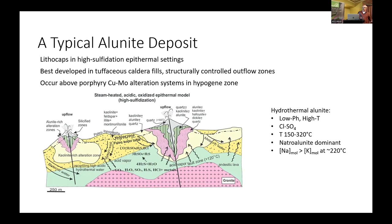A typical alunite deposit, shown in cross section, is below the quartz litho-cap where high-temperature fluids come up along structures and replace the felsic hosts. They're best developed in andesite and felsic calderas along the bounding structures. The hydrothermal alunite forms from low-pH, high-temperature, chlorine and sulfate-rich fluids at around 150 to 320 degrees. Most of them are natroalunites — sodium-dominant alunites — and most tend to form around that temperature range.